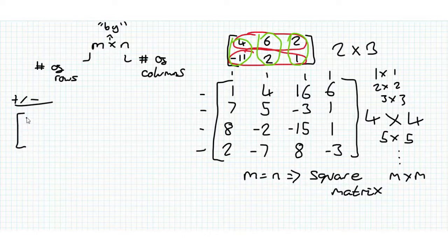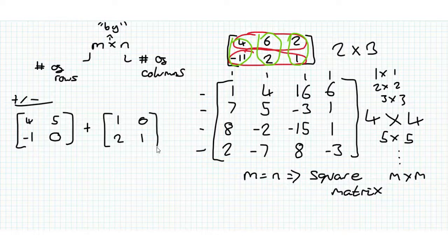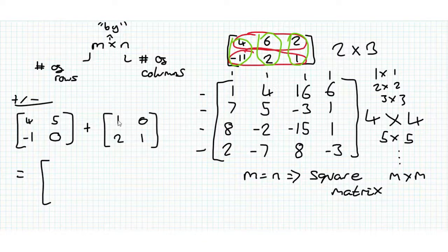So let's take some 2 by 2 matrix 4, 5, minus 1, 0, and we want to add this to 1, 0, 2, 1. So what we do is we take this top left element in this matrix and we add it to the top left one in this one. That's what I mean by corresponding, the elements in the same position. So 4 plus 1, that's 5. Now we do 5 plus 0, that's 5. Minus 1 plus 2, that's 1. And 0 plus 1 is 1.